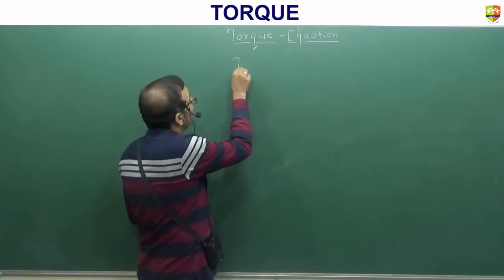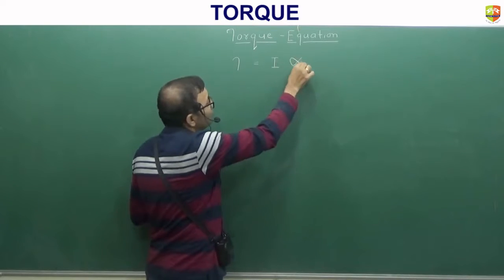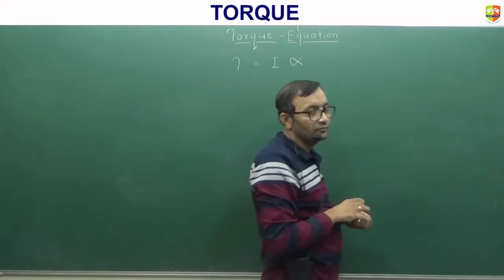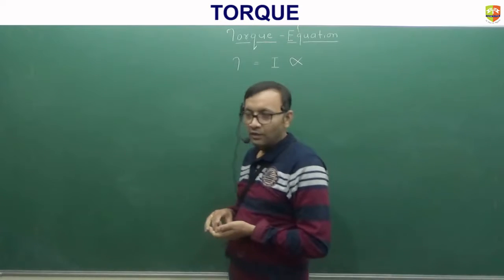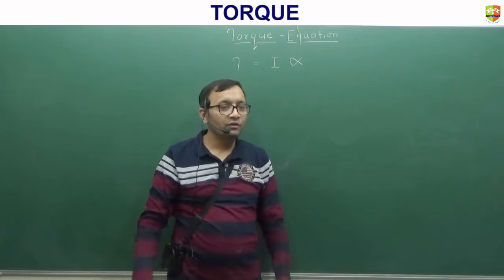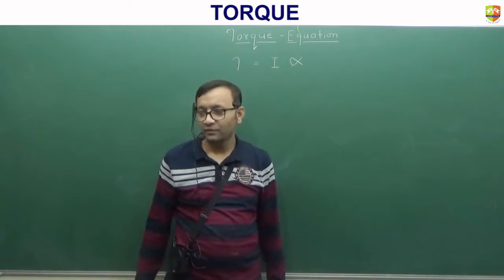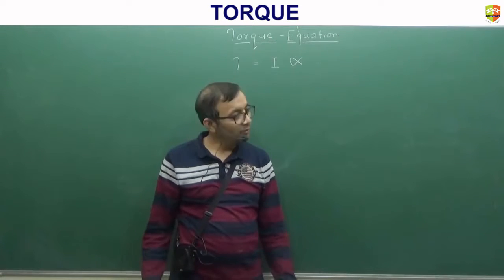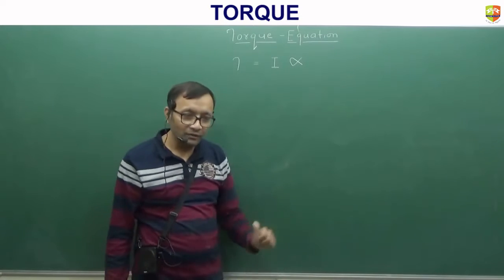So torque is equal to I times alpha. Just like force is equal to mass times acceleration, torque is equal to I times angular acceleration. What is I? Moment of inertia. Torque we already know how to find out. And alpha is angular acceleration.